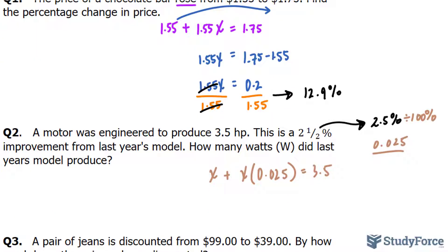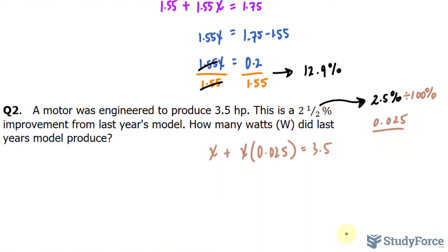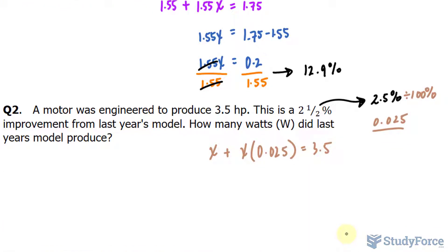We need to solve for x, and it's a little bit different than how we solve for x in question number one. Because, on the left side of this equation, we have two terms that are alike. Both of these terms have an x, so they can be combined. You combine these terms by simply adding the coefficient of this term, which is 1, with the coefficient of this term. 1 plus 0.025 is 1.025x.